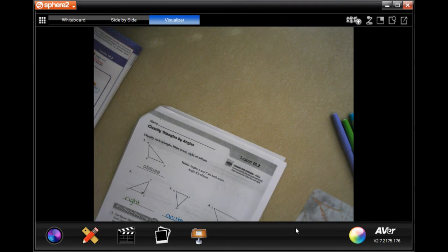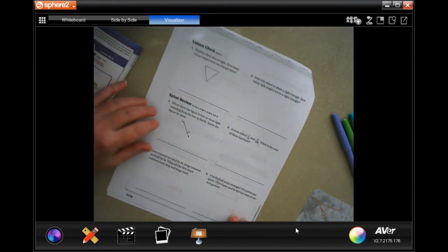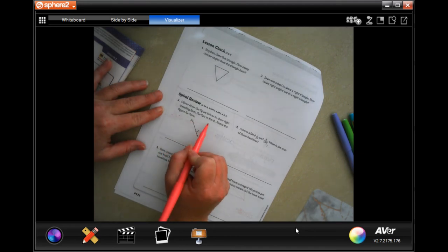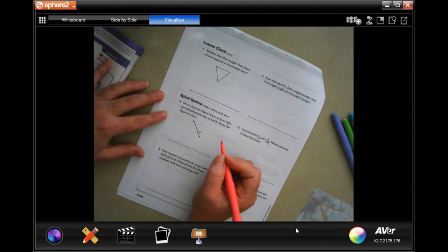So we're going to go ahead and go to the back where you guys are going to do the lesson check and we're going to deal with the spiral review. It says Oliver drew a figure below to show the light traveling from the sun to the earth, name the figure he drew.